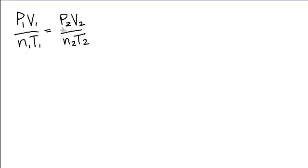And we have the combined gas law, which is P1V1 over N1T1 equals P2V2 over N2T2. Now, there are eight variables here, eight different variables that stand for eight different numbers, but it's not as complicated as that.